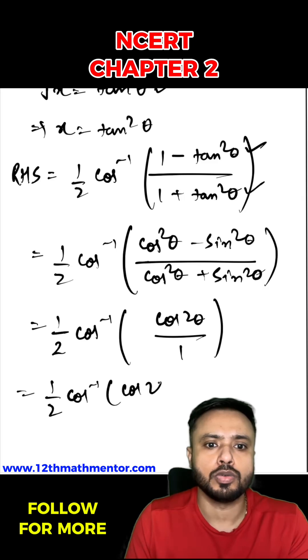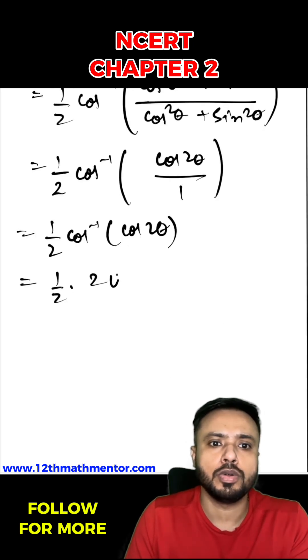This is nothing but 1 upon 2 cos inverse cos 2 theta. That will be equal to 1 upon 2 into 2 theta. So this 2 and 2 cancel. I got RHS value as theta.